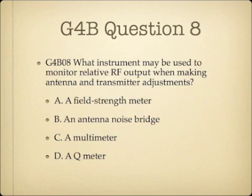Question 8. What instrument may be used to monitor relative RF output when making antenna and transmitter adjustments? A, a field strength meter. B, an antenna noise bridge. C, a multimeter. Or D, a Q meter.